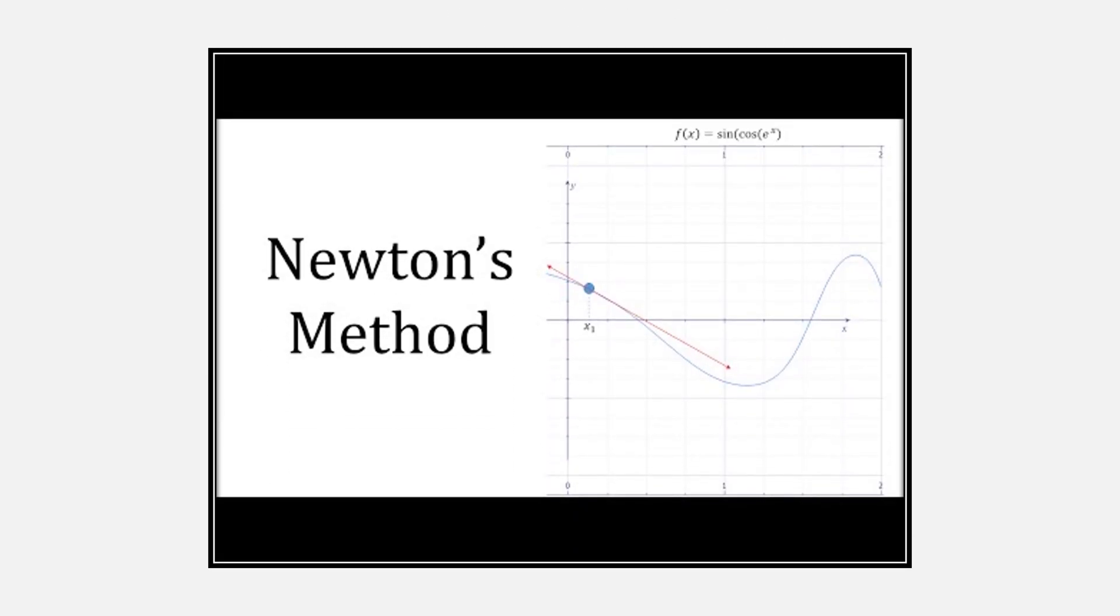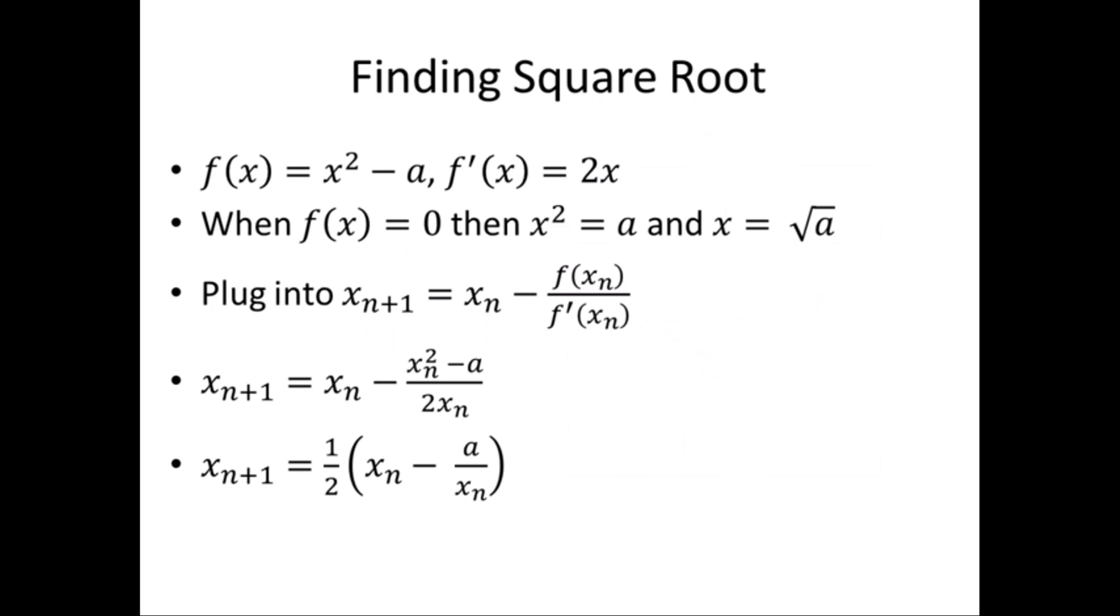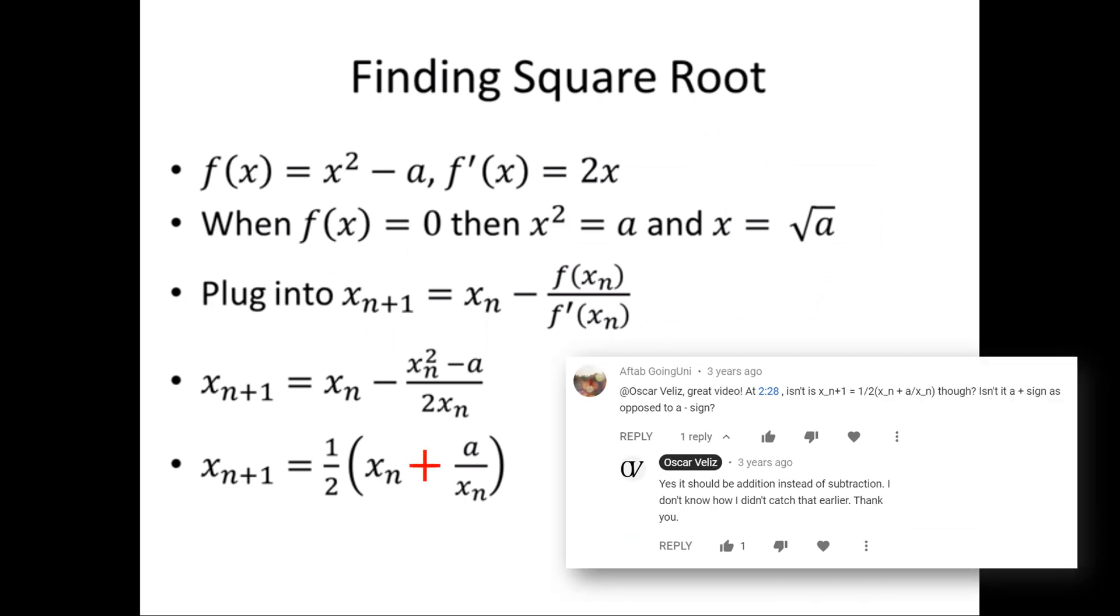Let's start with Newton's method. In my equation for finding square root, that negative sign should be a plus. Thank you to user aftabgoinguni for pointing this out. It really does help when you show your work, which let's do right now.